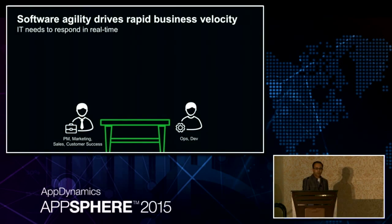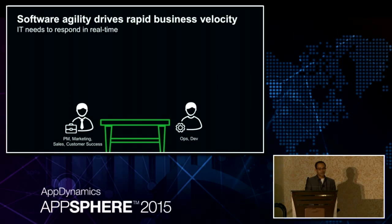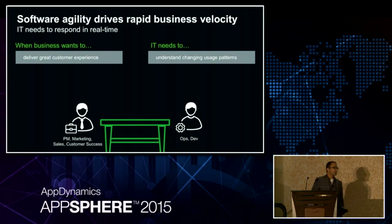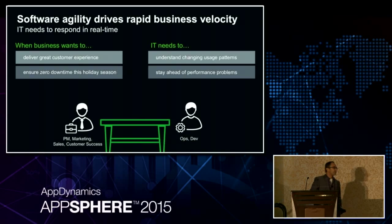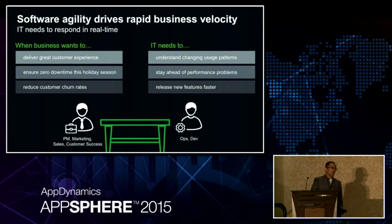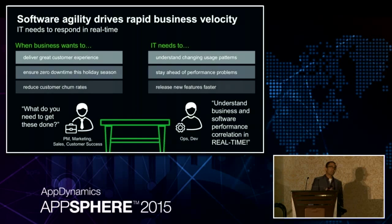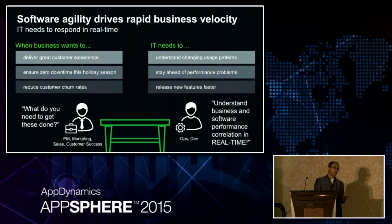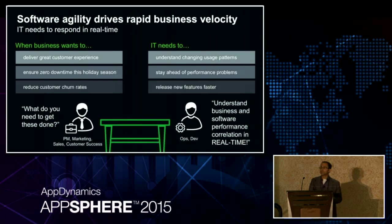At AppDynamics we feel that software is the real reason behind business velocity. What that means for IT is that IT needs to respond in real time — understanding what is changing about users and their usage patterns, staying ahead of performance problems during the holiday season, reducing churn time, and releasing features faster. When business asks IT and DevOps what they need, it comes down to having performance data from APM and tying that to business data in real time.